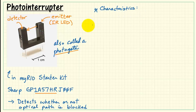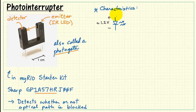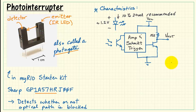Let's take a look at some characteristics of this particular device. The emitter LED has a forward drop of approximately 1.2 volts, provided you have about 10 to 20 milliamps of current flowing through it. That optical path is then picked up by the optical sensor on the other side. The sensor output is amplified, passed through a Schmidt trigger, and then it operates this NPN transistor right here.